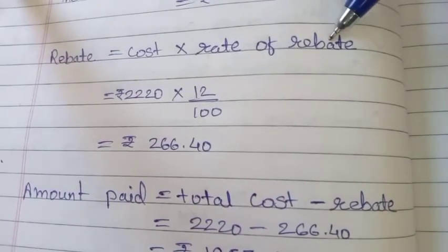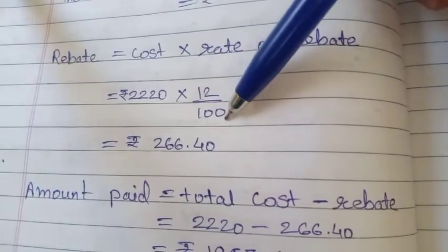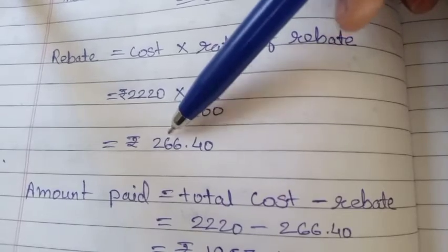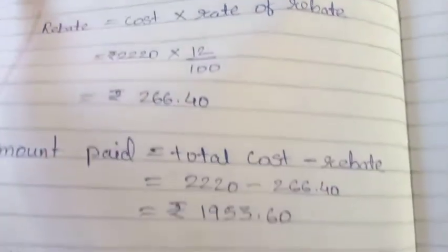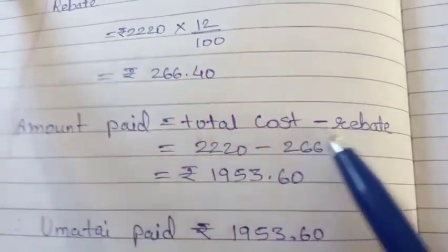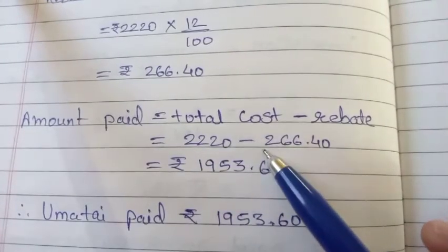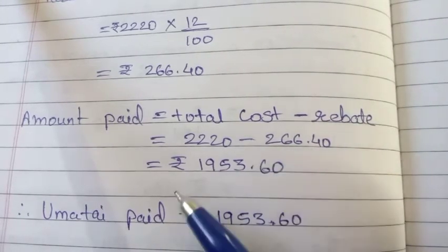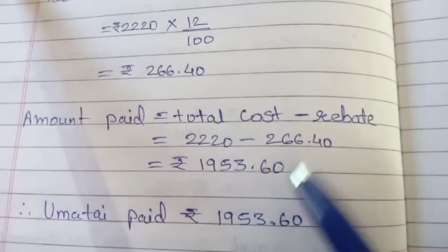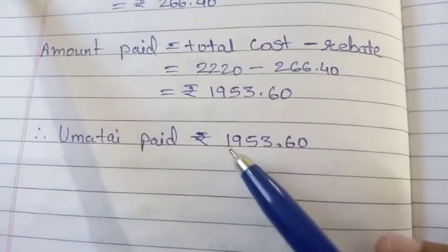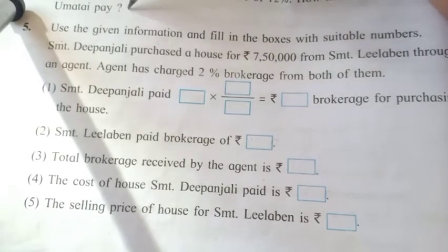Rebate = cost × rate of rebate = 2220 × 12/100 = rupees 266.40. Amount paid = total cost − rebate = 2220 − 266.40 = rupees 1953.60. Therefore Umatai paid rupees 1953.60.